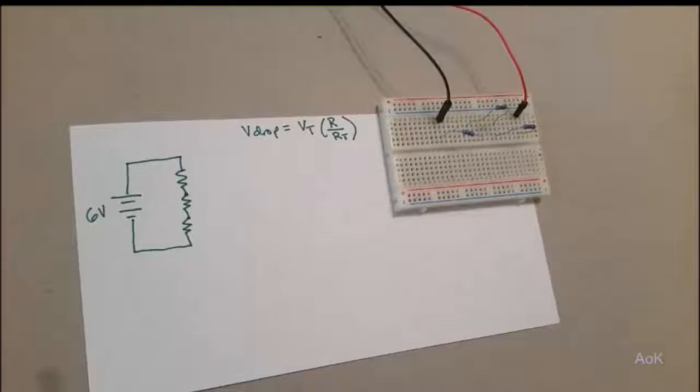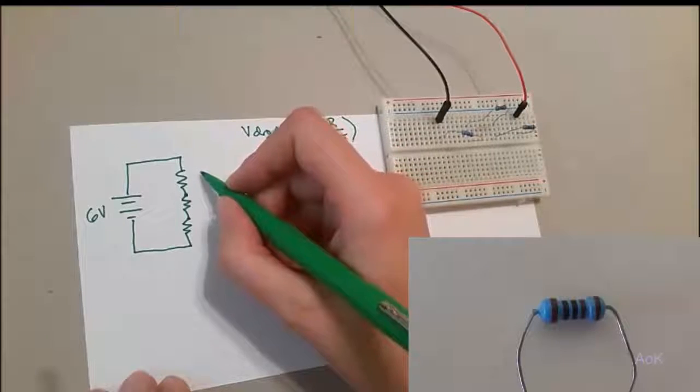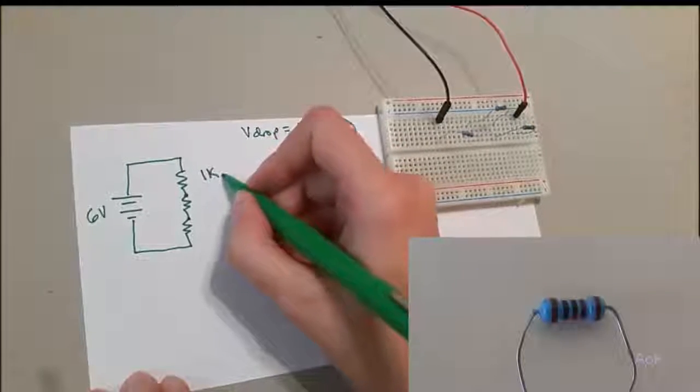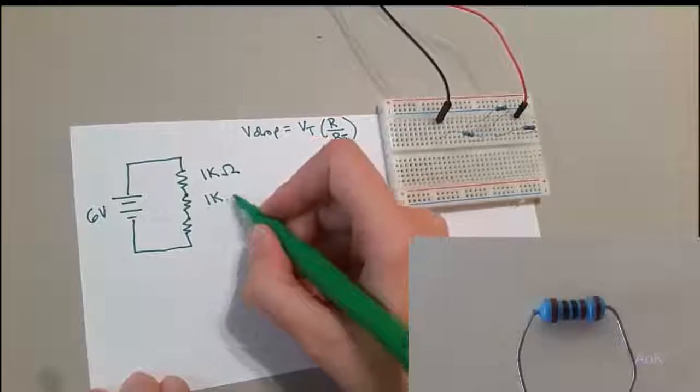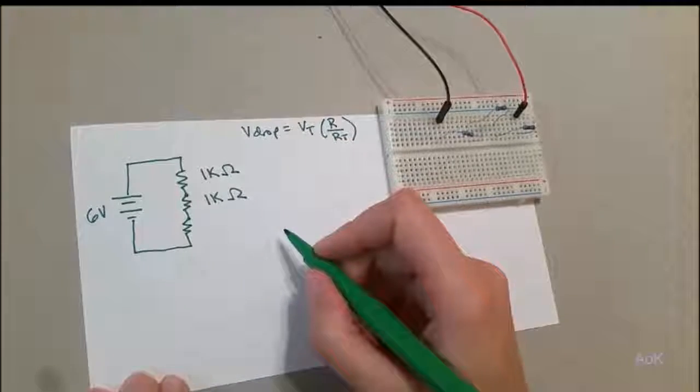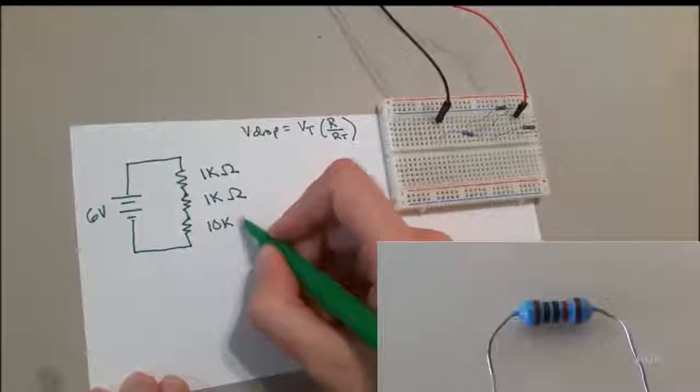For this next circuit, we've changed up our resistors. Our first resistor is 1,000 or 1k ohms. Our second resistor is also 1k ohms, but our last resistor is 10,000 or 10k ohms.